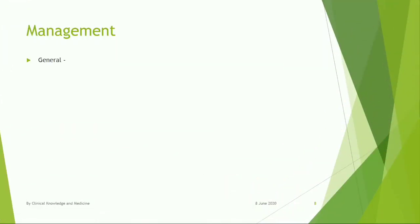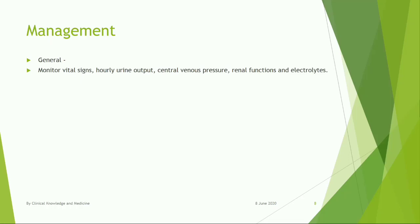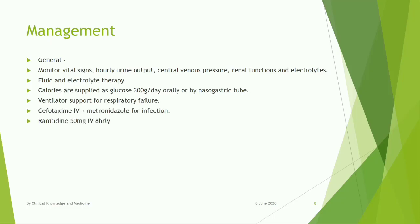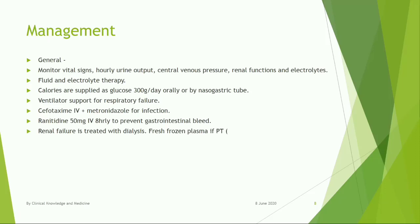Management — General: Monitor vital signs, hourly urine output, central venous pressure, renal functions and electrolytes. Fluid and electrolyte therapy. Calories are supplied as glucose 300g per day orally or by nasogastric tube. Ventilator support for respiratory failure. Cefotaxime IV plus Metronidazole for infection. Ranitidine 50mg IV 8-hourly to prevent gastrointestinal bleed. Renal failure is treated with dialysis. Fresh Frozen Plasma if prothrombin time is more than 1.5 times normal.